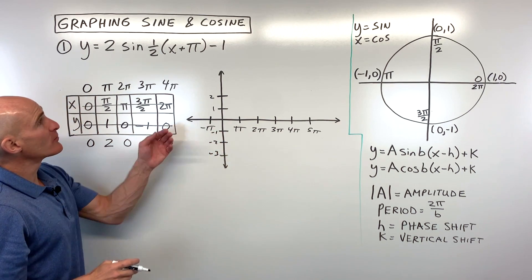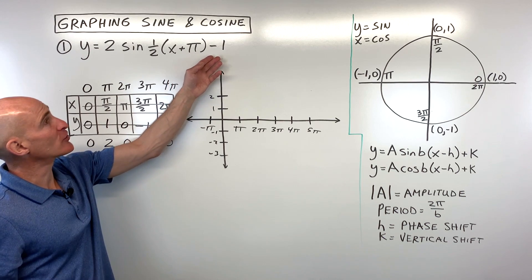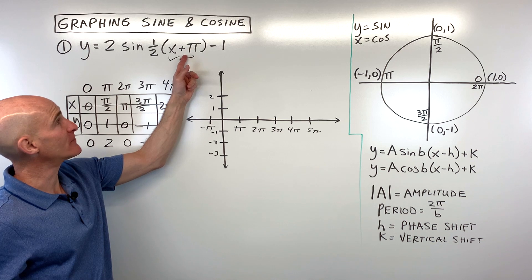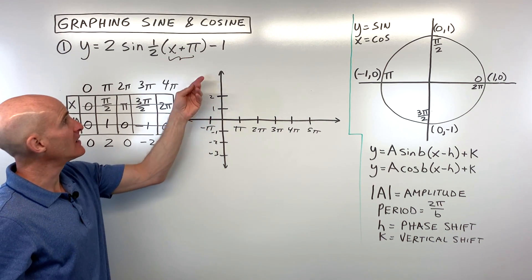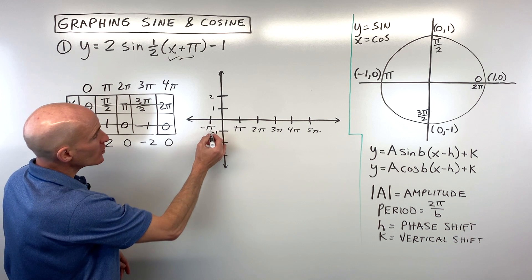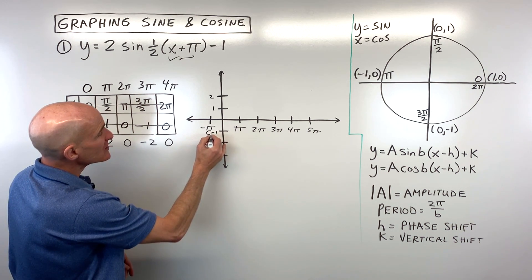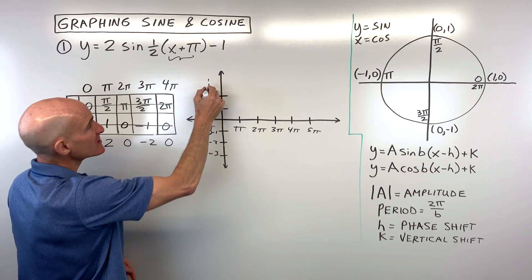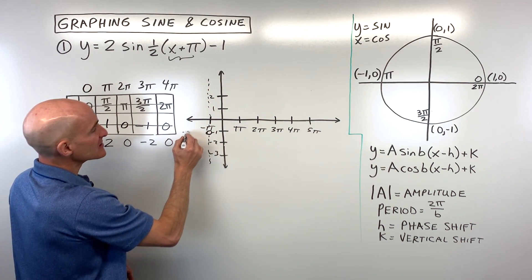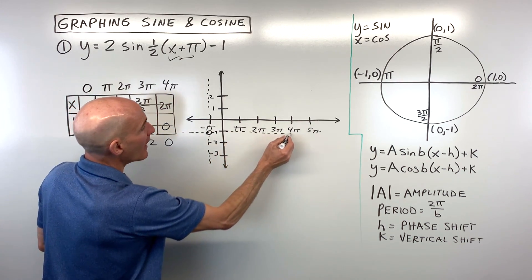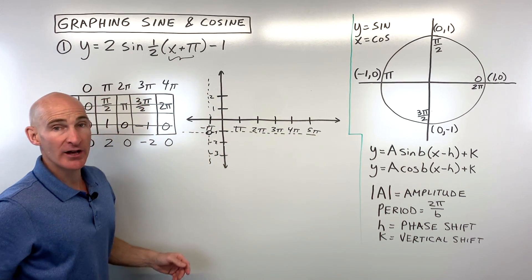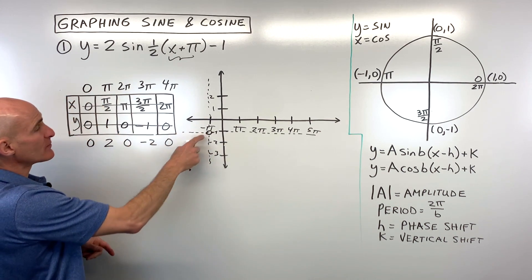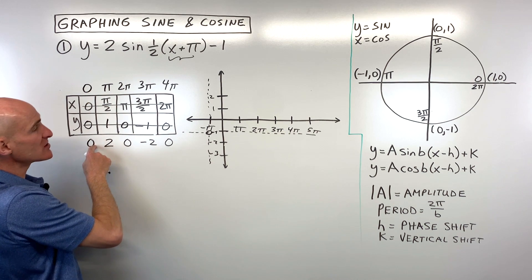Now let's pay attention to the phase shift and the vertical shift. The term grouped with x shifts the graph horizontally but with the opposite effect, so plus π means it's going to shift left π. The minus one is going to shift it down one. That means I'm going to treat the point at negative π, negative one as our new origin — you can even sketch in a new y-axis and a new x-axis to help visualize this as our starting point.